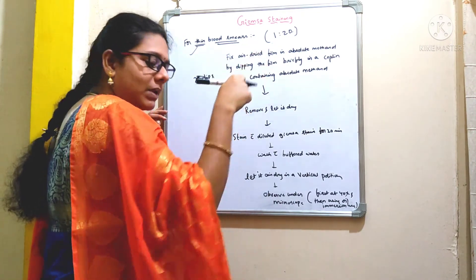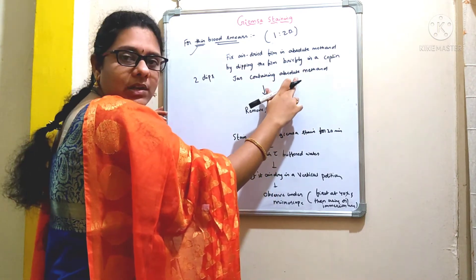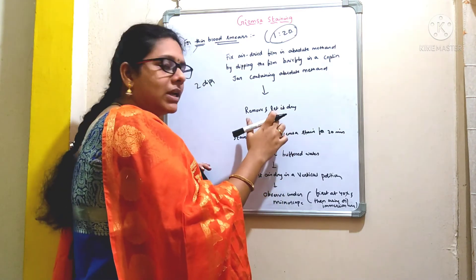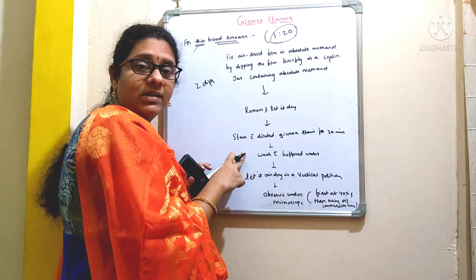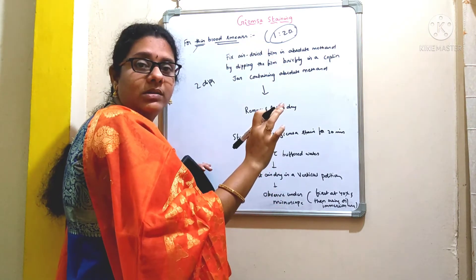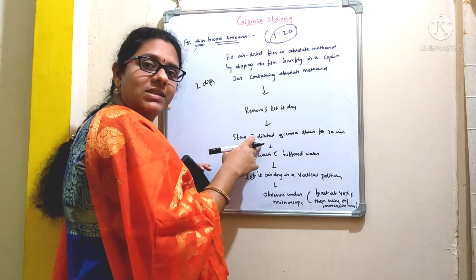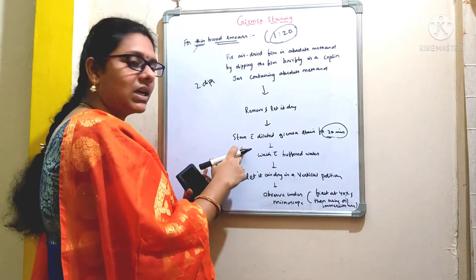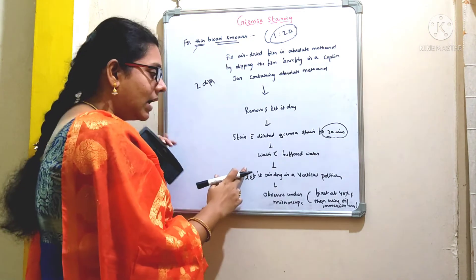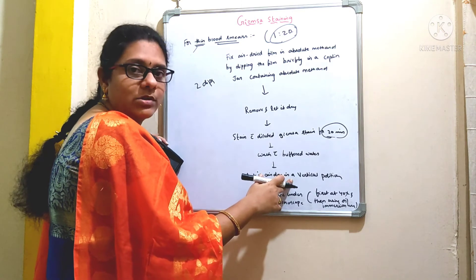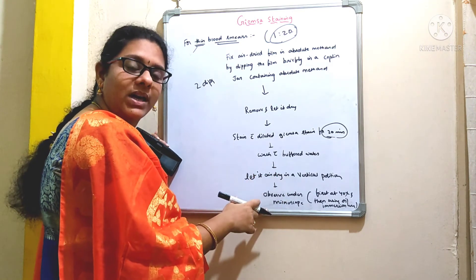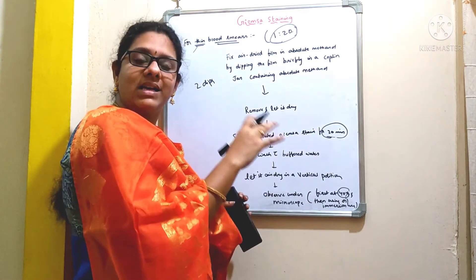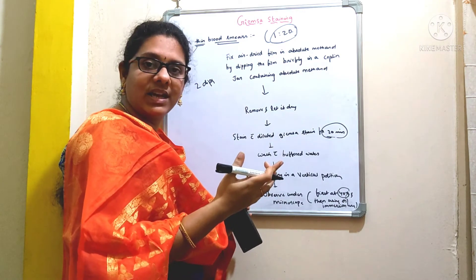Dip the film in and out of the Coplin jar containing absolute methanol. After this dipping process, remove it and let it dry. After the film gets dried, add the Giemsa stain at 1:20 dilution and expose the film to this dye for 20 minutes. After this step of staining, wash it with buffered water. Then let it dry in a vertical position.